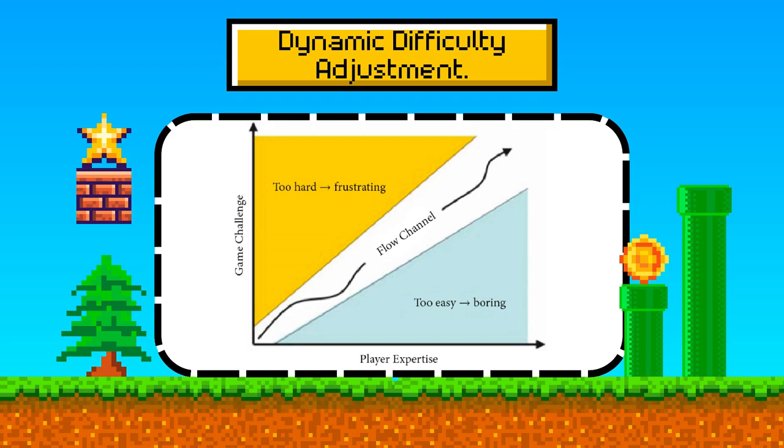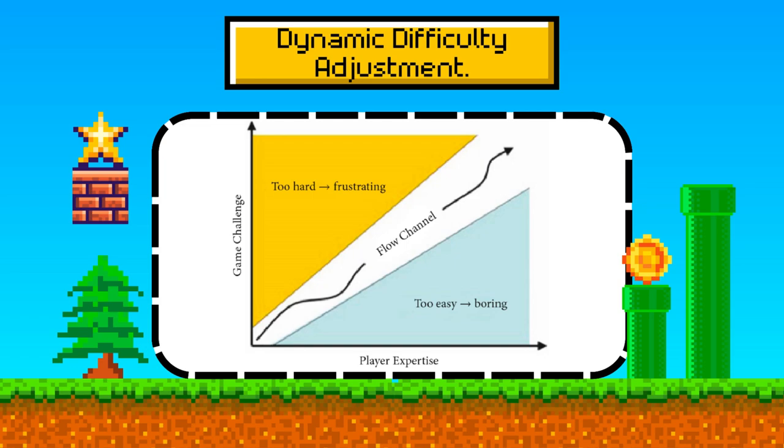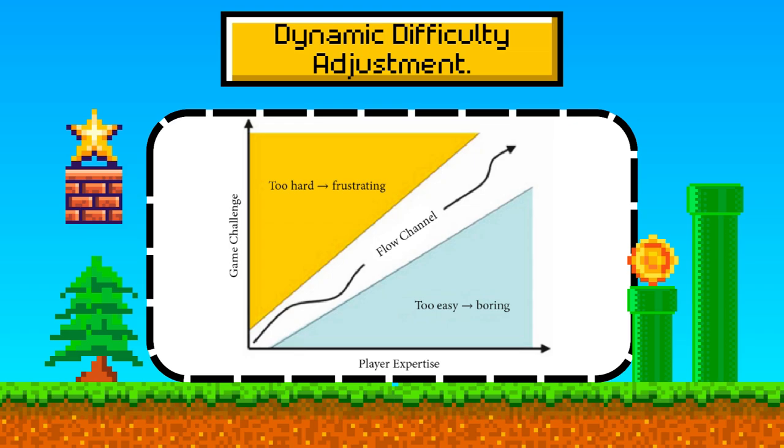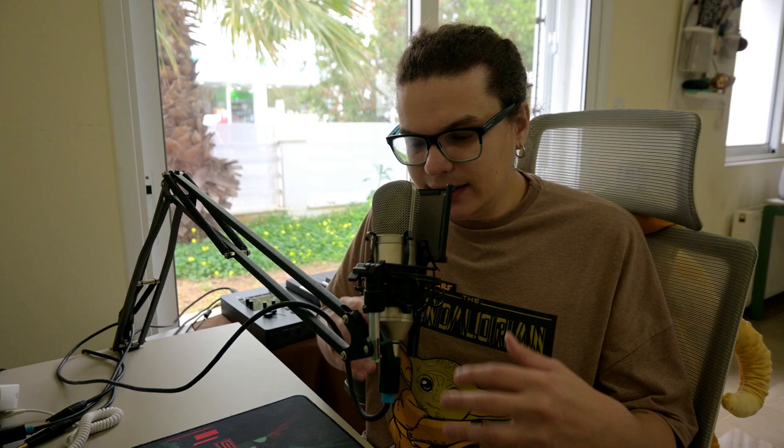You need to define your approach before you start level design placement, and here you have several options to learn from famous examples. A prime example is found in the Resident Evil series, particularly Resident Evil 4. This game adjusts the difficulty based on the player's performance. If the player dies frequently, the game reduces the number of enemies in subsequent attempts. Conversely, if the player is breezing through levels, it subtly ramps up the challenge. This dynamic adjustment keeps the game engaging for players of varying skill levels without breaking immersion.